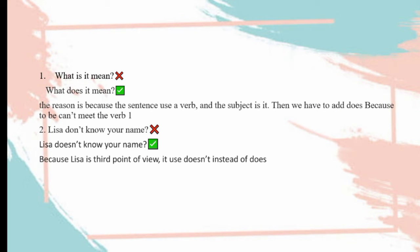Another correction: 'What is it mean?' should be 'What does it mean?' because the sentence uses 'hope' — the subject is 'it,' so we must add 'does.' Similarly, 'Lisa don't know your name' should be 'Lisa doesn't know your name,' because Lisa is third person singular, so we use 'doesn't' instead of 'don't.'